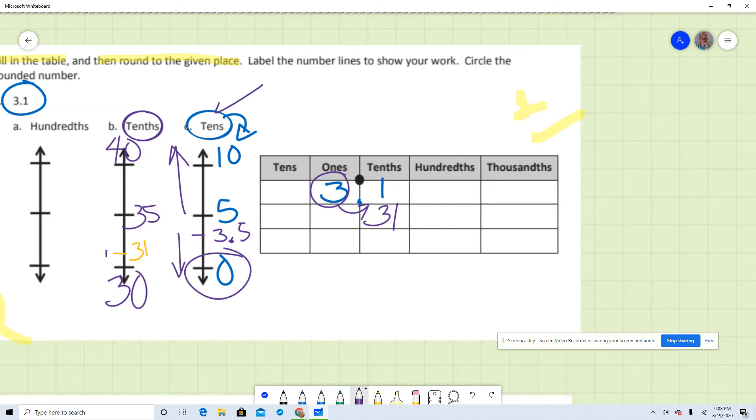Now as you can see, 31 is closer to 30, but it's not closer to 40. So now we can conclude that 31 is going to be rounded to 30, 30 tenths.